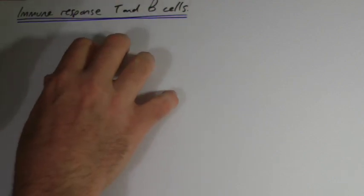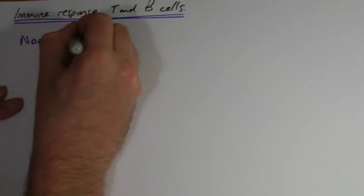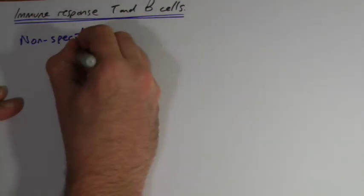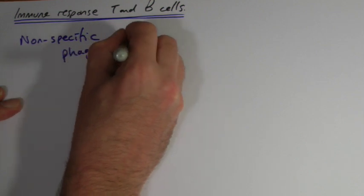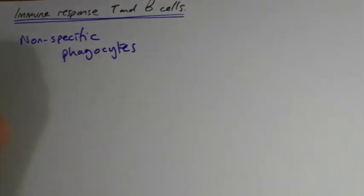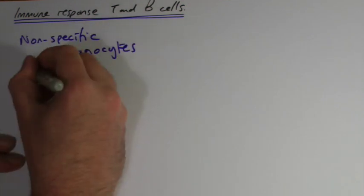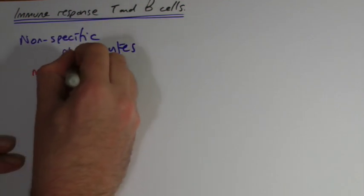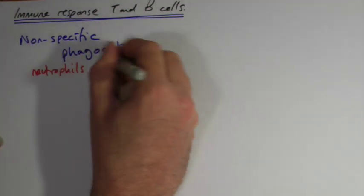So first thing, when you're thinking of the immune response, is just to be clear on this non-specific response first of all, which is the idea of phagocytes, so eating cells if you like, of which there are two types: neutrophils, which are the commonest type of white blood cell, and macrophages.